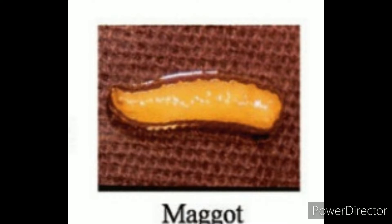Second, larvae. The larvae are whitish maggots. They feed on the fruit flesh, causing the fruit to rot. After four to seventeen days, the maggots leave the fruit, making a hole in the skin, and drop to pupate in the soil.